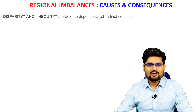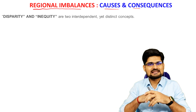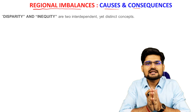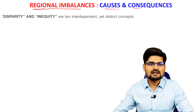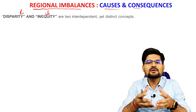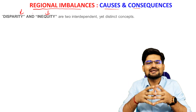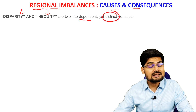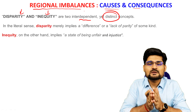Let's learn about the concept of regional imbalances, its various causes and consequences. Before we go into the concepts of imbalances, there are two words we need to understand: disparity and inequality. These are very common terms we often use in socio-economic interpretations of reality. They are two interdependent terminologies, yet they are very distinct.